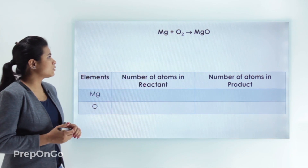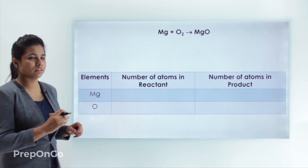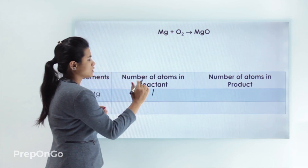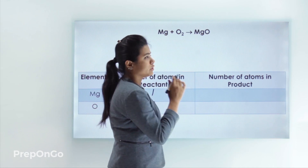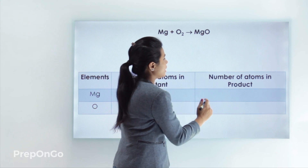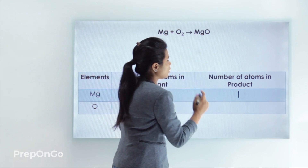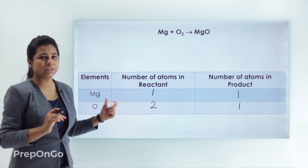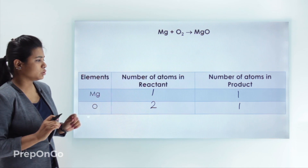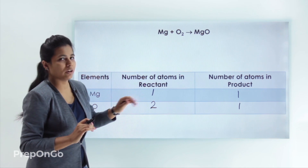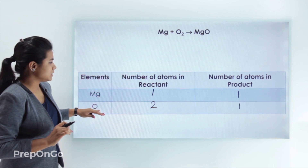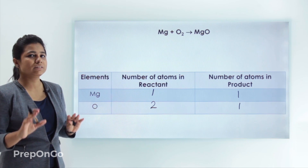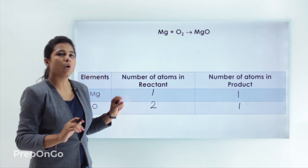To balance the equation, we write the number of atoms of each element on both sides. On the left hand side, magnesium has one atom and oxygen has two atoms. On the right hand side, magnesium has one atom and oxygen has only one atom. We start balancing with the element having the maximum number of atoms. Since oxygen has two atoms on the left but only one on the right, we multiply by two on the product side.